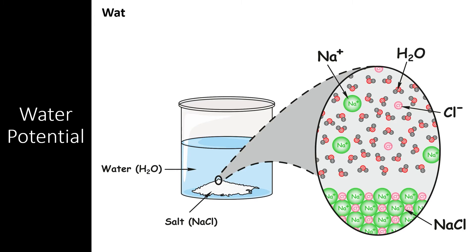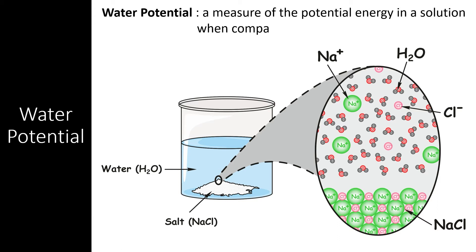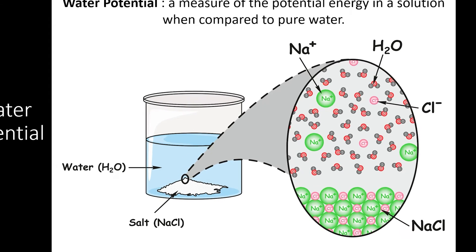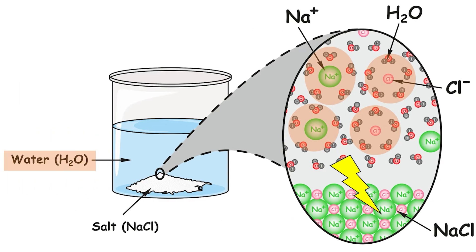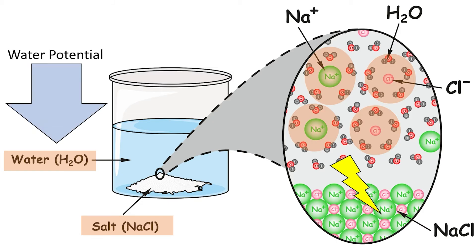Water potential is a measure of the potential energy of water that a solution carries when compared to pure water. Because of water's ability to form hydrogen bonds, water can physically move polar substances and ions, and moving anything takes energy. Pure water has a lot of potential energy stored up — it has the potential to move large amounts of solutes. When you add solutes to the water, some of the hydrogen bonds are used to surround and distribute the solutes, so the entire solution has a lower amount of potential energy, or a lower water potential.